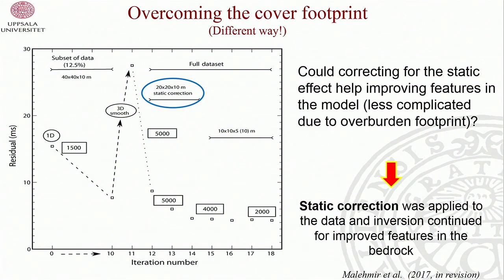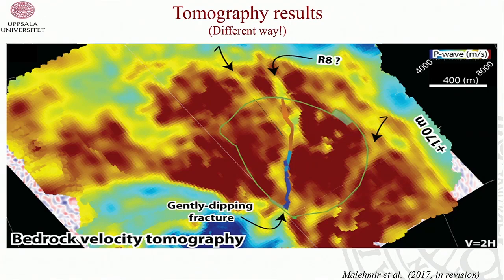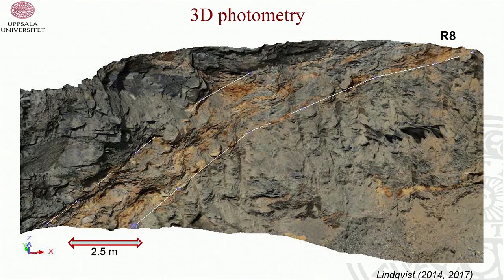We thought there might be a footprint of overburden on the tomograms, so we removed that footprint and inverted the residual through a more refined process. Comparing the traditional travel time tomography to the overburden-removed version, in the enhanced result the fracture system is now very clear. We even managed to identify additional lineaments. There are two nice low-velocity lineaments cutting the planned open pit. Looking at the R8 reflector as a fracture system — we don't see any displacement, so we don't know if it's a fault or just a fracture system — it is 5 to 25 metres thick in various places.